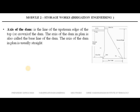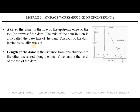The axis of a dam is the line of the upstream edge of the top or crown of the dam. The axis of a dam in plan is also called the base line of the dam, and is usually straight. In cross section, the vertical line passing through the upstream edge of the top of the dam is called the axis of the dam. The axis or base line of the dam may be straight or slightly curved. The length of the dam is the distance from one abutment to the other, measured along the axis of the dam at the level of the top of the dam. It is the usual practice to mark the distance from the left abutment to the right abutment.